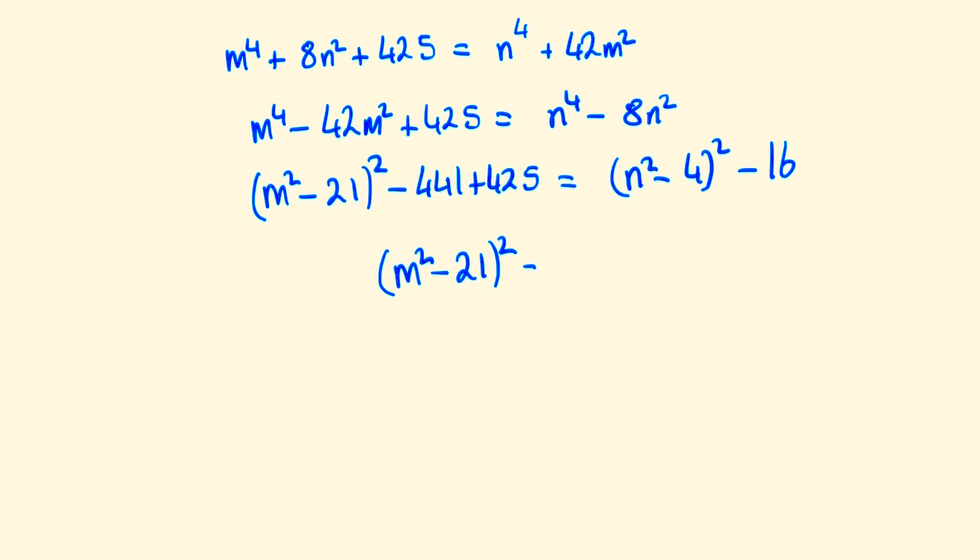This leaves us with (m^2 - 21)^2 = (n^2 - 4)^2. Taking the square root of both sides leaves us with m^2 - 21 = ±(n^2 - 4).